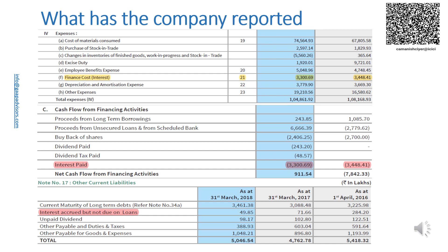This indicates that the company has paid interest in cash in an amount greater than the finance costs reported in profit or loss. This also indicates that the company has reported non-cash items in the statement of cash flows. Para 43 of IND AS 7 requires that investing and financing transactions that do not require the use of cash or cash equivalents shall be excluded from the statement of cash flows.